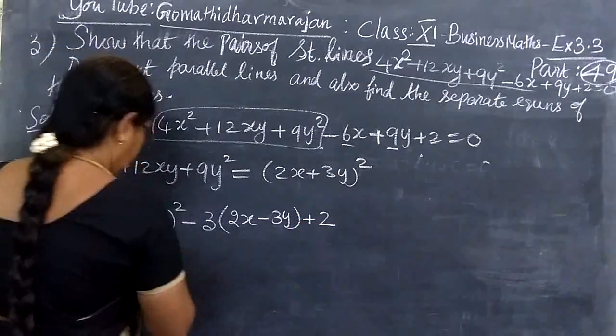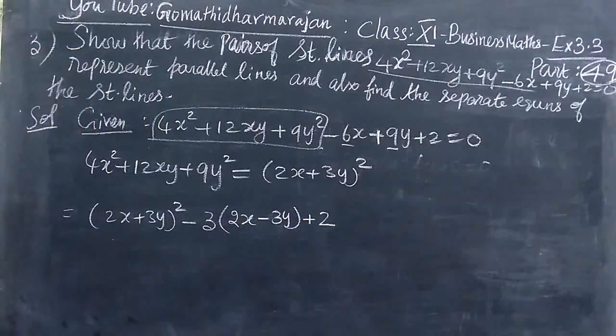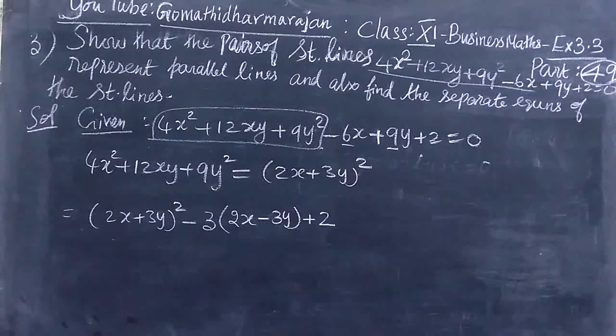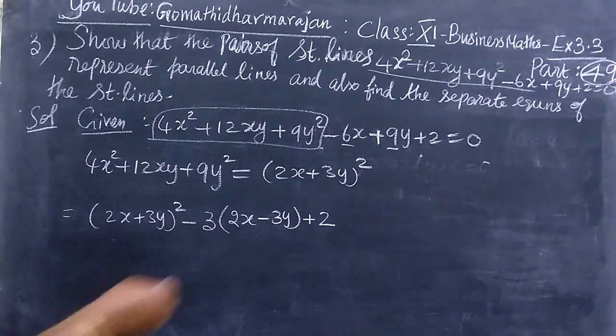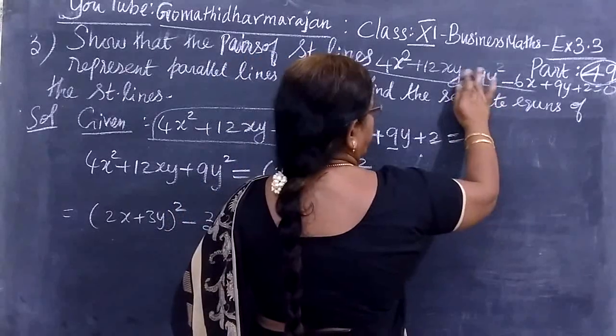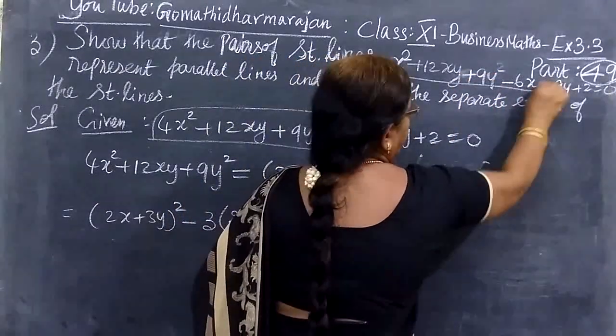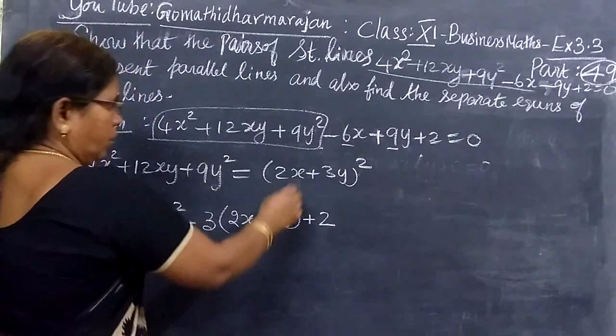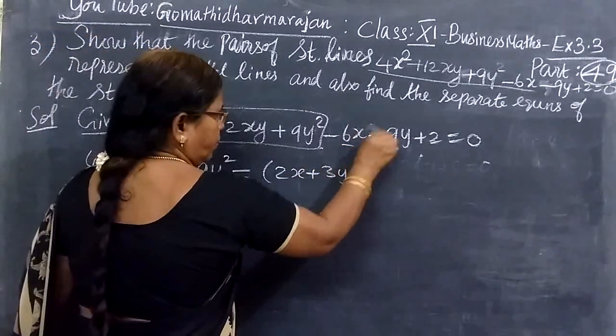Taking the square, this gives us (2x + 3y)² - 1. Now we will use the formula to get the value. We can write this as (2x + 3y + 1)(2x + 3y - 1).